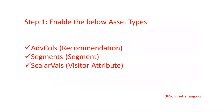Now let's understand the configuration. Step one: enable the asset types. For Engage, we need to enable ADV calls, segment, and scalar wells. These asset types are especially meant for Engage. ADV calls represent recommendation, segment represents segment, and scalar wells asset type represents visitor attribute.